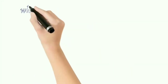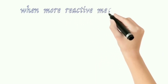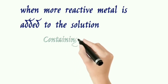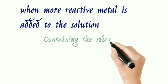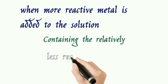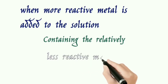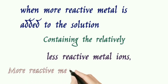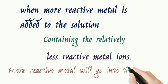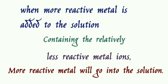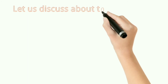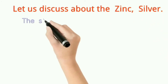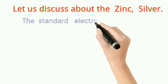The key concept is: when a more reactive metal is added to a solution containing a relatively less reactive metal ion, the more reactive metal will go into the solution — meaning it gets oxidized and displaces the less reactive metal ion.